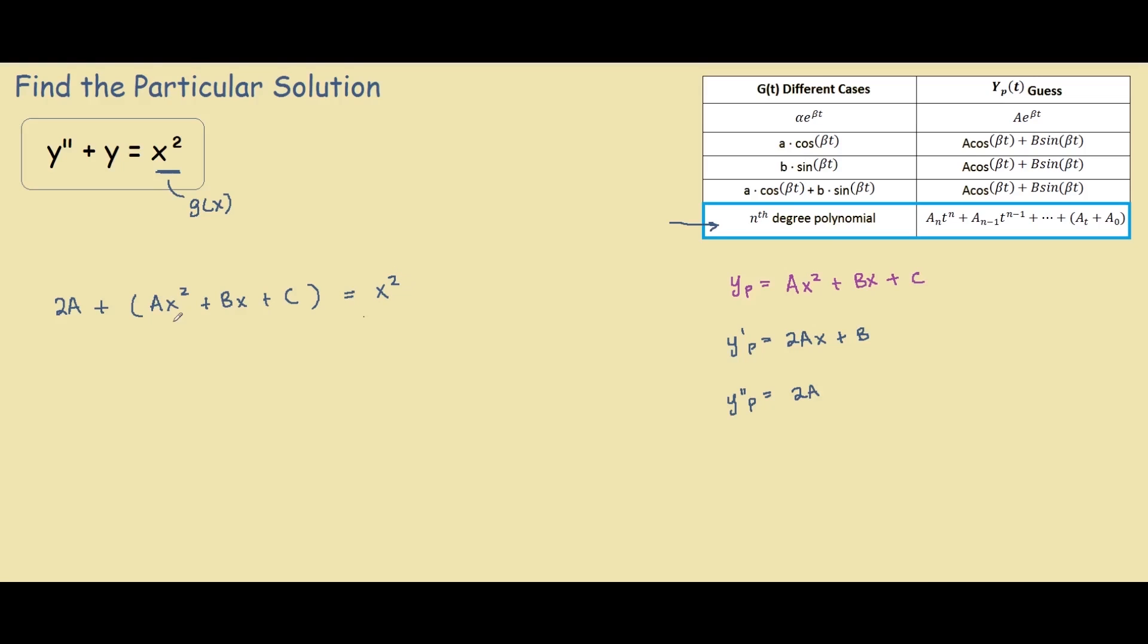So our next step is to equate coefficients of equal powers. So over here we have x squared and x squared. So we say ax squared equals x squared, therefore a equals 1.